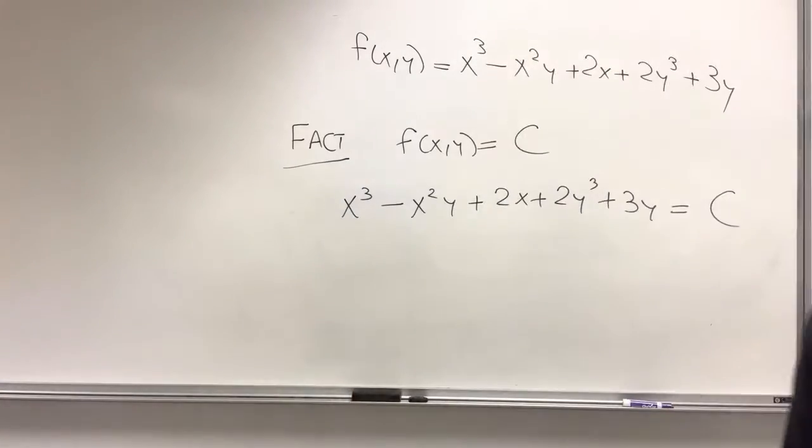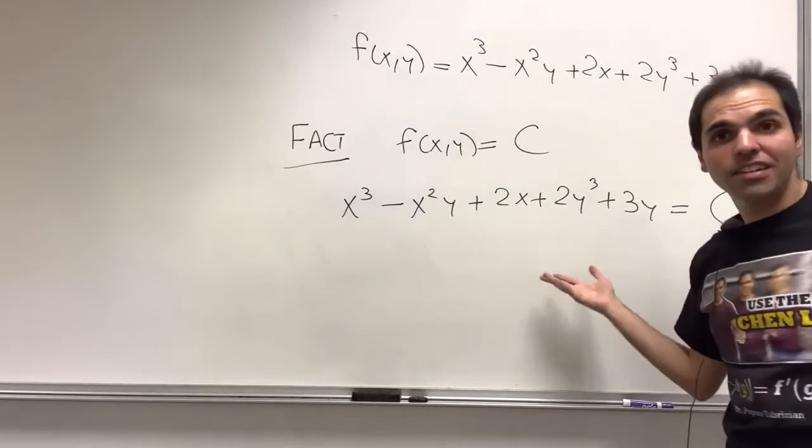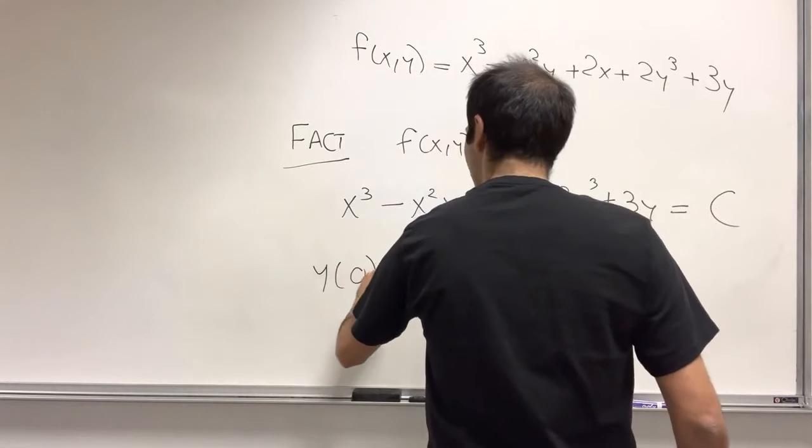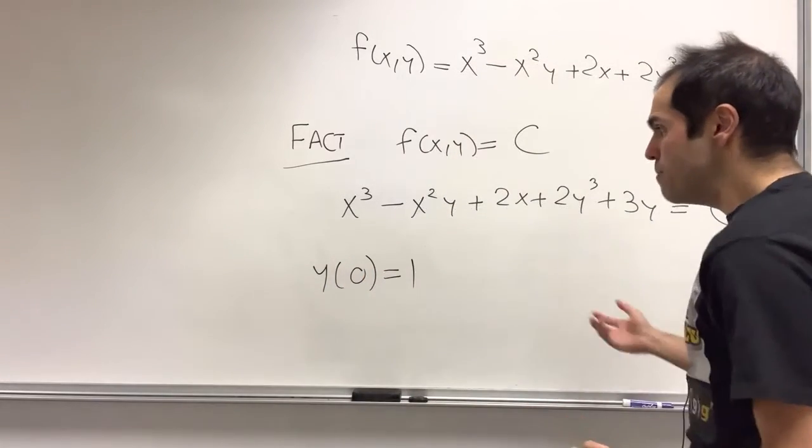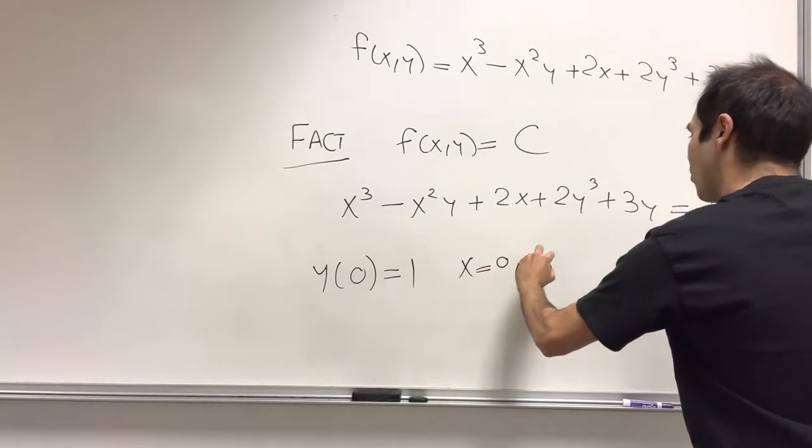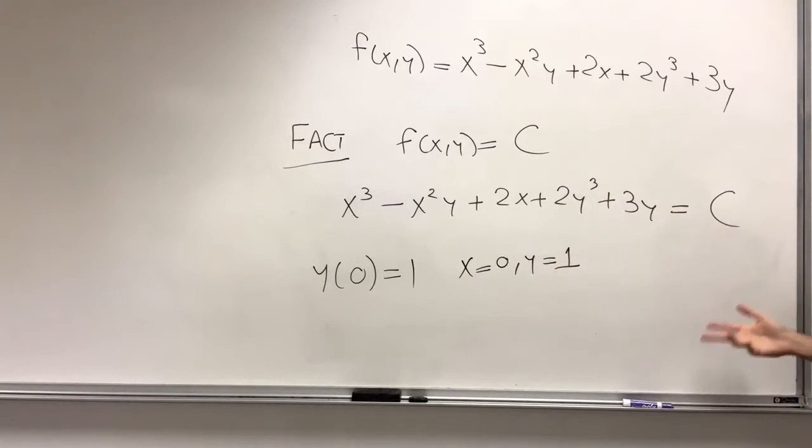Now, we're not quite done yet because we do have the initial condition. So we do have that y of 0 equals 1, meaning that if x is 0, then y is 1.